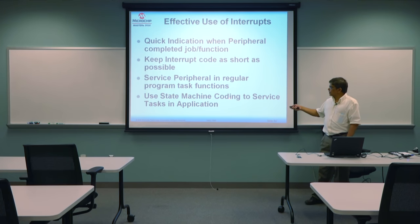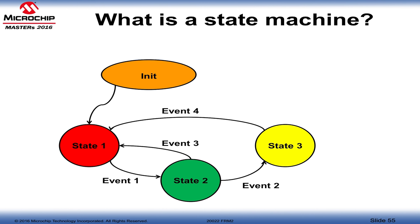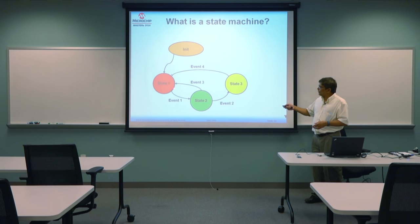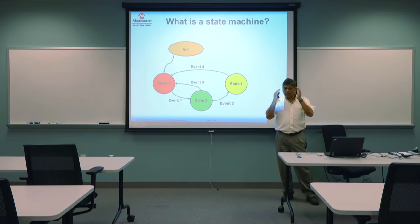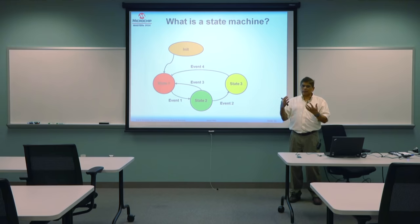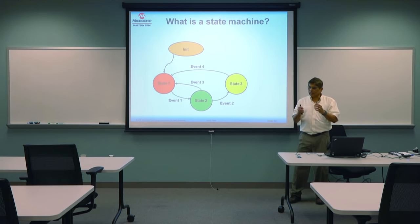State machines always start with an init state, then move to a stable state. From a state, different events take you to different states — event 1 to state 2, event 2 to state 3, and so on. When creating state machines, figure out how many states your application needs, then develop the state machine accordingly.